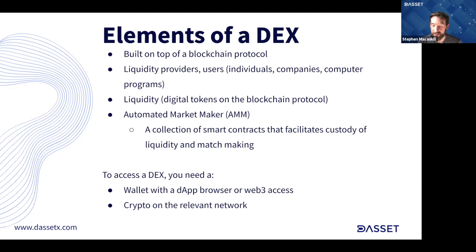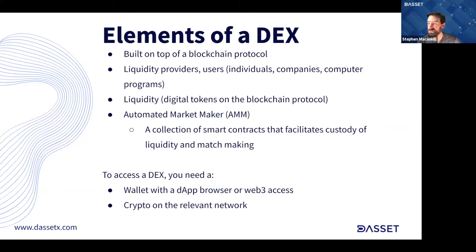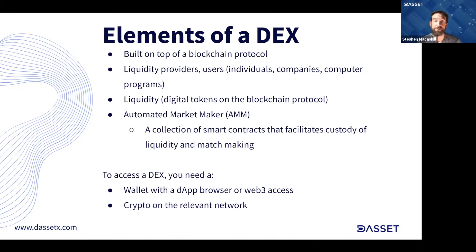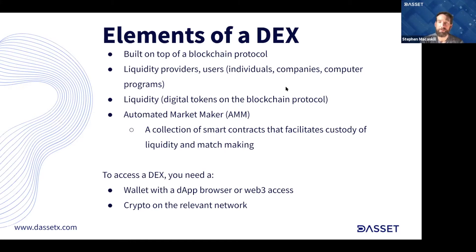In the early days, and still today, there were hybrid versions of order books where the order book would be managed by a centralized third party — software managing the ledger wouldn't necessarily be on-chain. On the flip side, you have completely on-chain order books, like organizations such as EtherDelta early in 2016. Then came a project called Bancor, and they implemented something called an automated market maker. Most decentralized exchanges today utilize these AMMs.